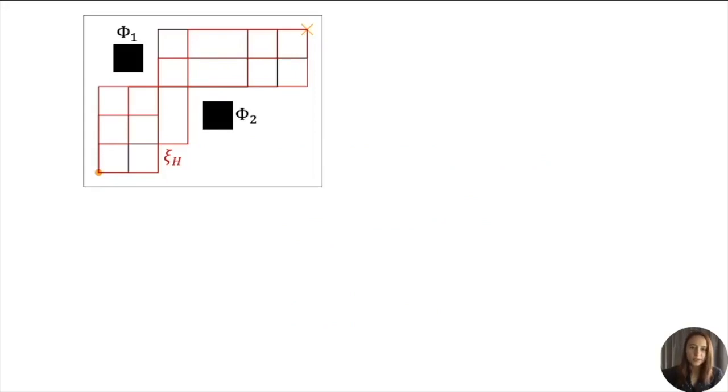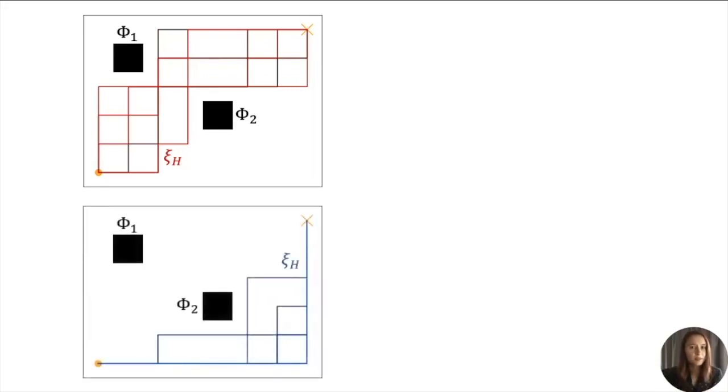In this grid world, the person is trying to teach a robot to navigate from the orange circle to the cross by providing 10 demonstrations. The human's reward trades off between two features, the distance to the two objects. In this situation, the person wants the robot to stay close to both objects. In the second grid, however, the person prefers the robot to stay far away from both of them.